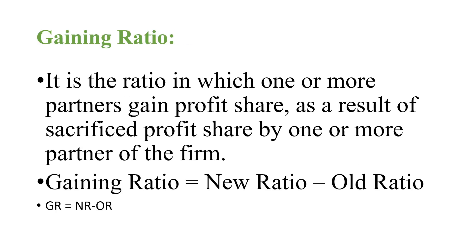Gaining ratio is the ratio in which one or more partners gain a profit share as a result of profit share sacrificed by one or more partners of the firm. It is simply one person's expense, another person's benefit — one person's income is another person's loss. The formula is: Gaining Ratio (GR) = New Ratio (NR) minus Old Ratio (OR).